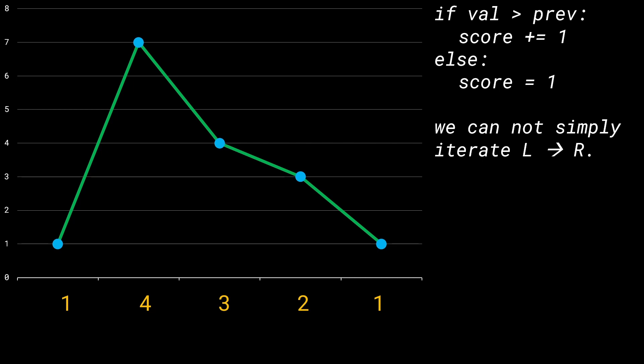This demonstrates that we cannot simply iterate from left to right. And iterating from right to left would just invert the problem. Iterating in either direction alone is not going to be helpful. We need a better way to assign candies to kids.